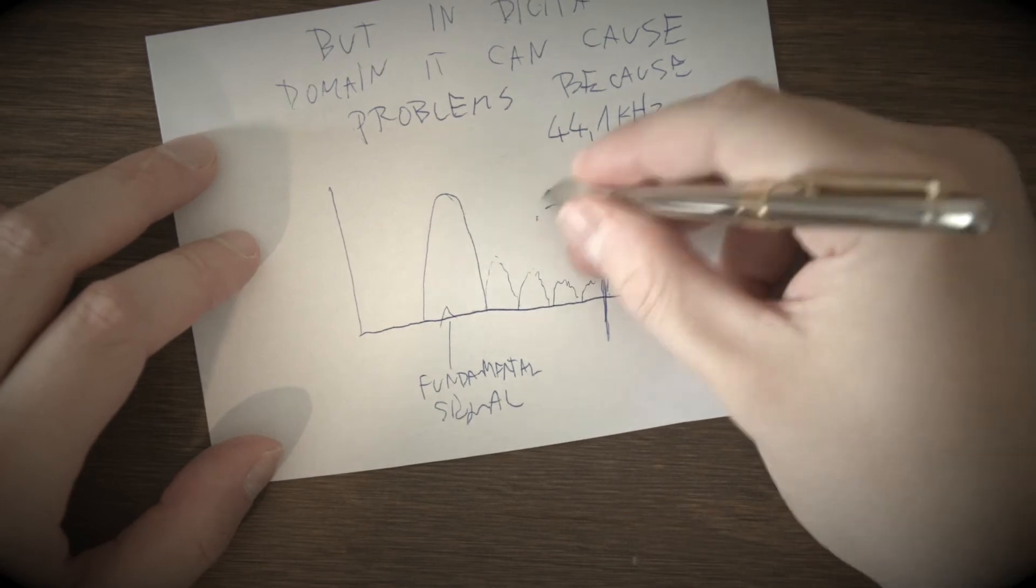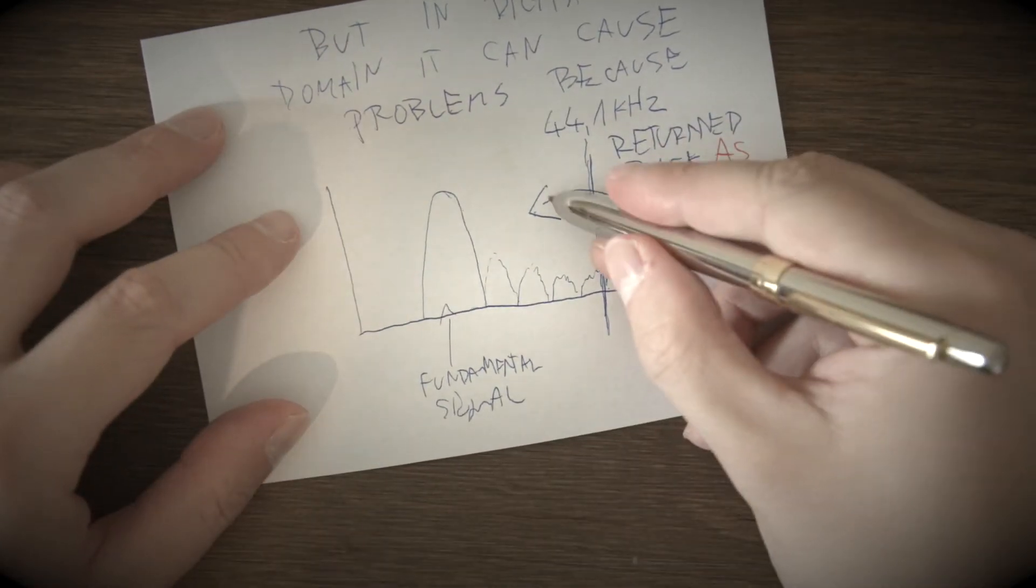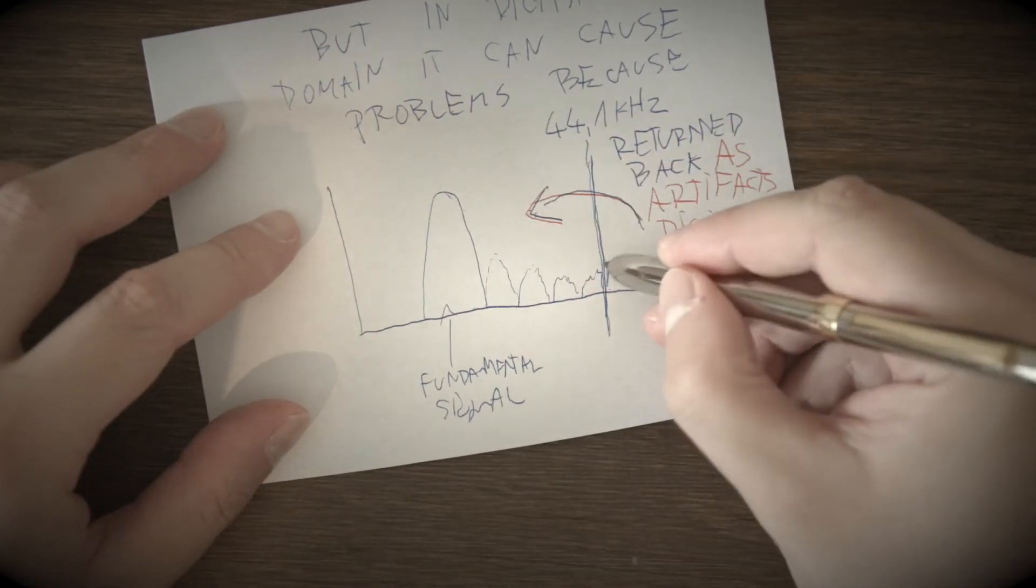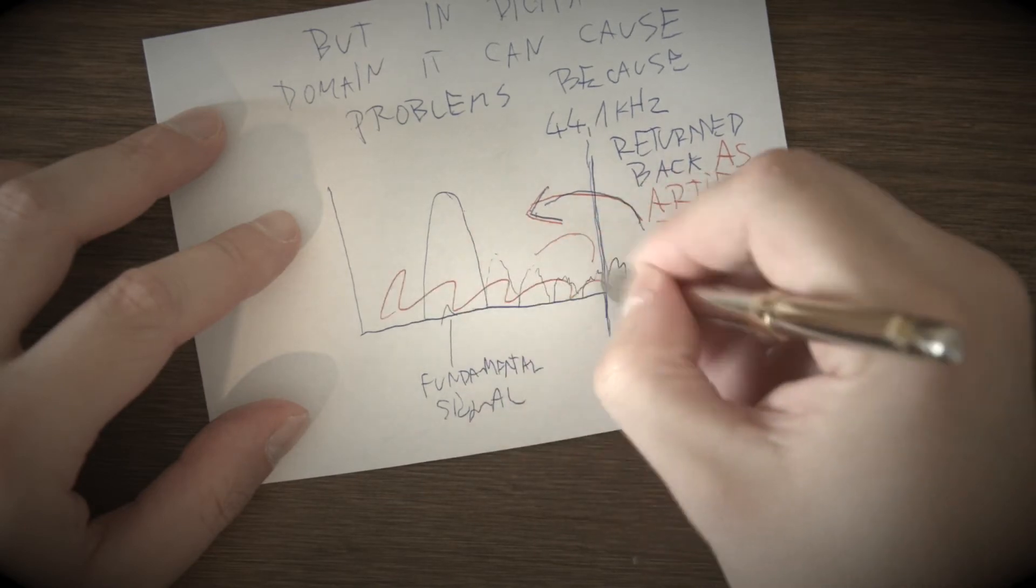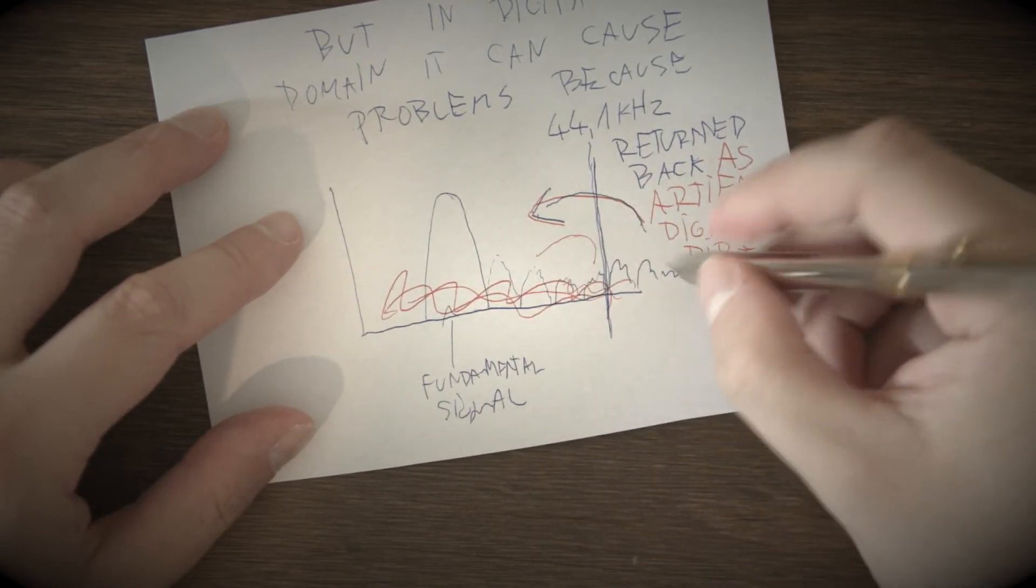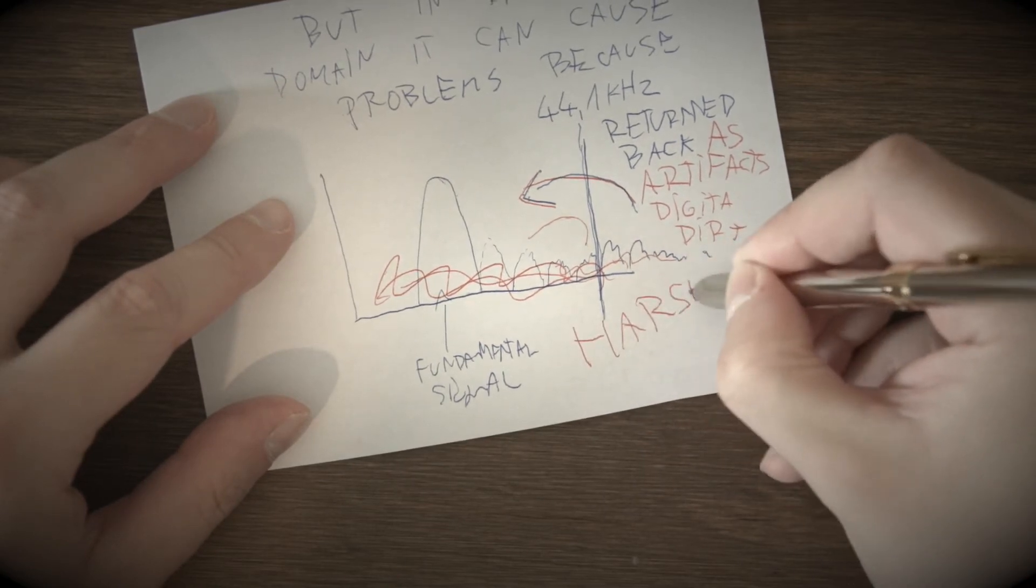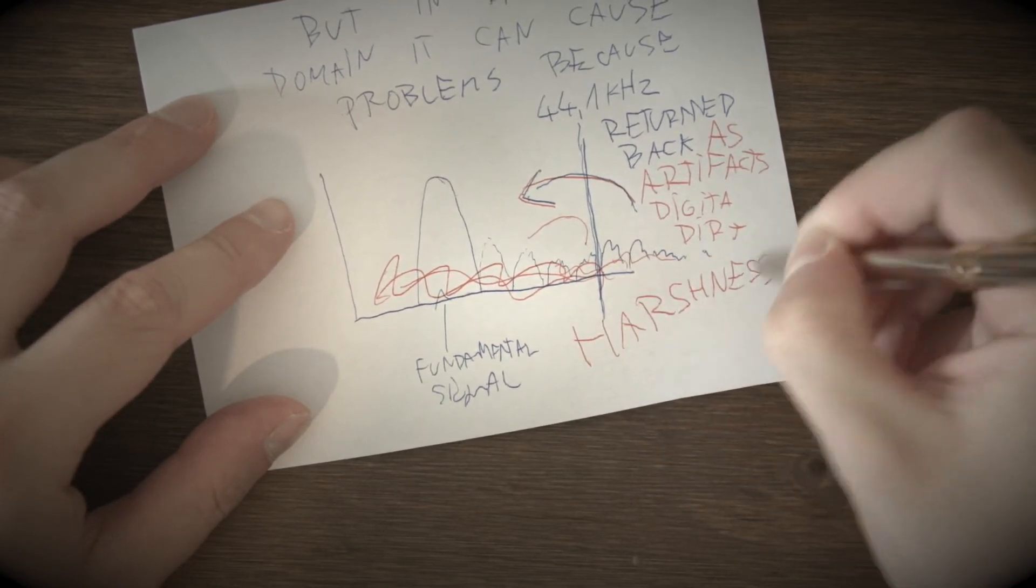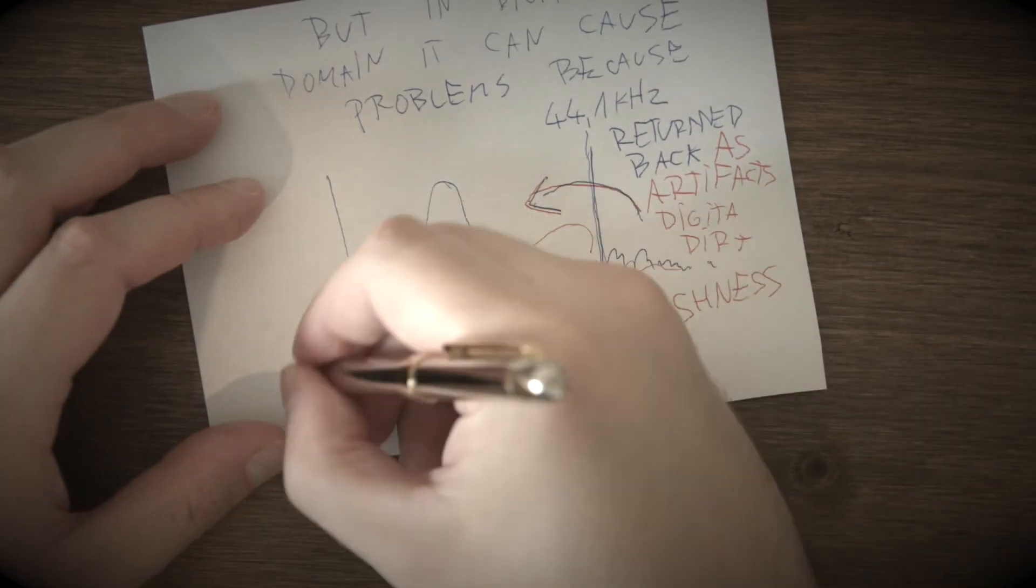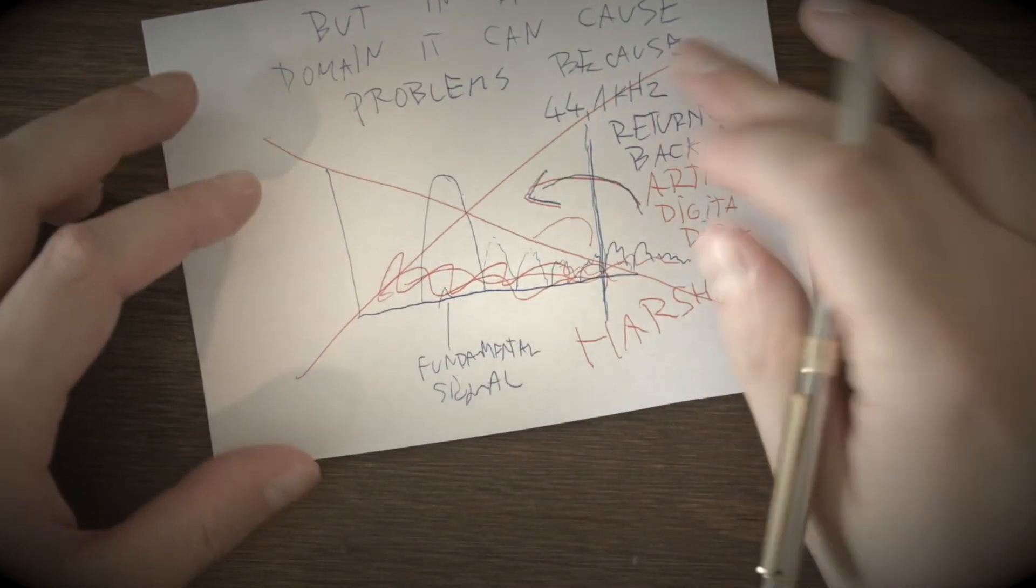But problem in digital simulations is that if multiples of original signal are higher than sampling frequency 44.1 or 48 kHz, they are returned back to signal as digital artifacts which create harshness and unpleasant sound. We are using our own special techniques to eliminate this behavior, including oversampling.